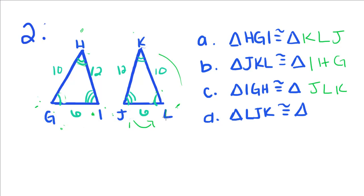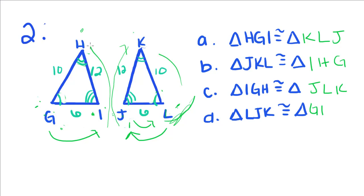And one more: triangle LJK. I started with L, so I have to start with G on this triangle. I went L to J, so I go G to I. Then I went up to K, so I go up to H. That makes sense because if you look at it, triangle HGI is really just reflected to get triangle KJL — H is up here, I would be over here, G would be over here. That's why these are reflections of each other.